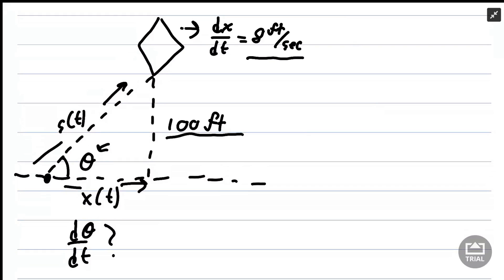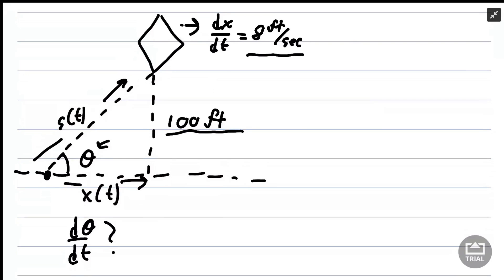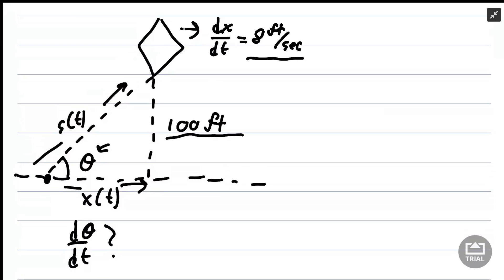We know that this 100 feet is constant and we know that we are moving to the right at a rate of 8 feet per second. I've called that dx/dt. We want to know what is dθ/dt, which I've expressed with this theta right here.